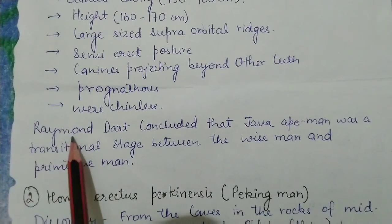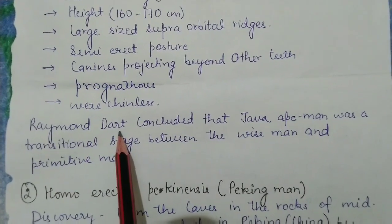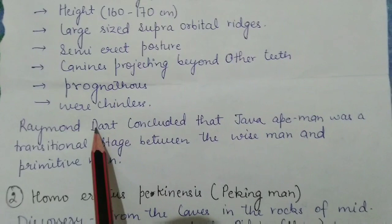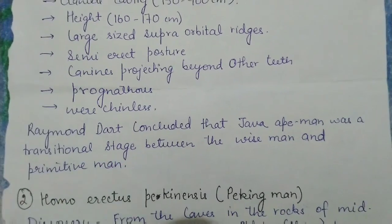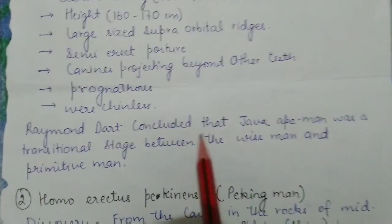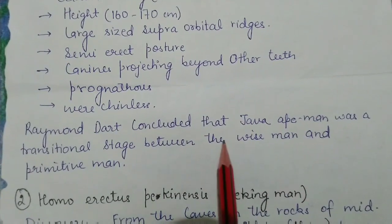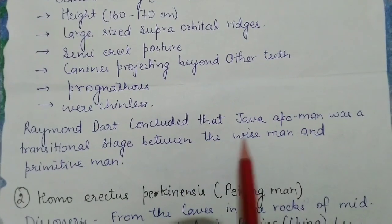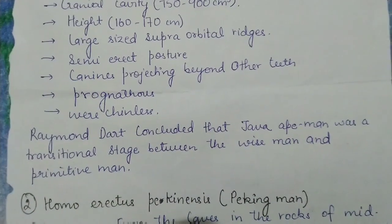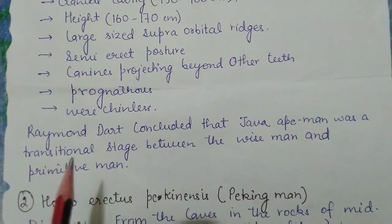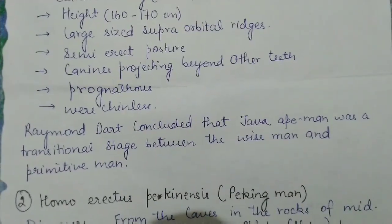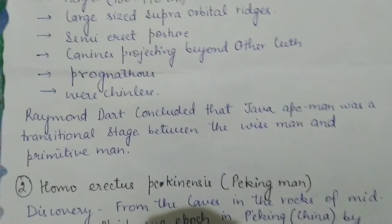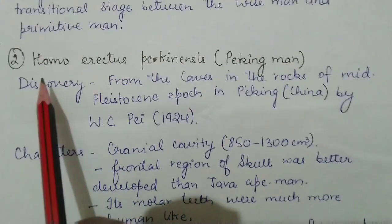Raymond Dart stated that the Java Ape Man — Homo erectus erectus — represents a transitional stage between the primitive man and the wise man.